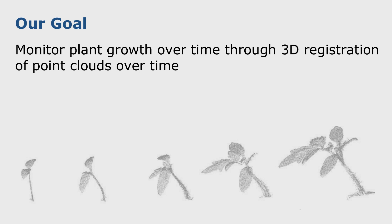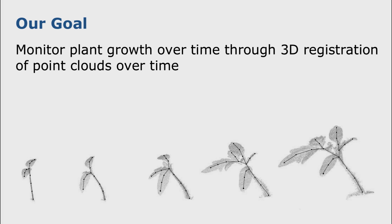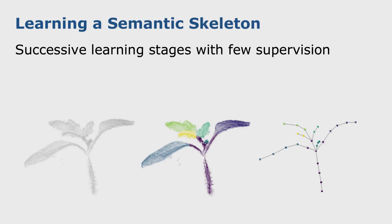Given a 3D time series of plant point clouds, the first step is to compute a semantic skeleton for each plant in our time series. To compute such skeletons, we perform successive learning stages starting from the raw point cloud. The first step is to classify each point as stem or leaf using an SVM approach. Then we consider only the points classified as leaf and perform unsupervised clustering to get the leaf instances. At this point we can compute a skeleton for each organ in the point cloud.